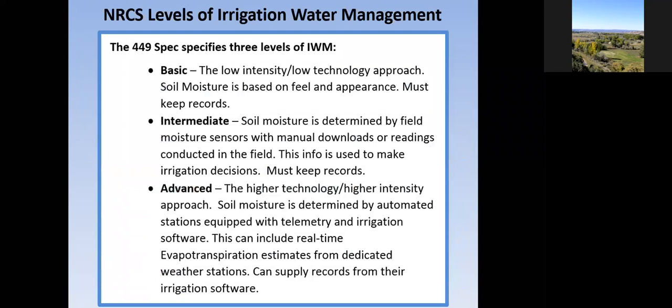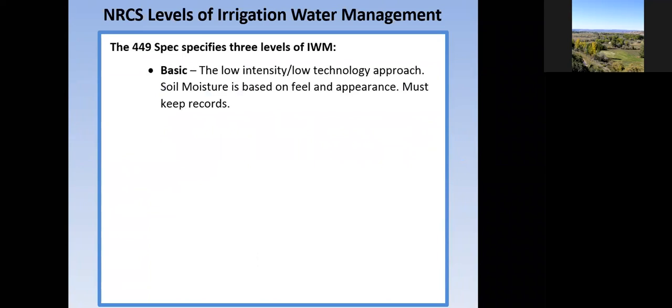The NRCS has three levels of irrigation water management: basic, intermediate, and advanced. I'm going to use those as my levels of irrigation water management and soil moisture monitoring. The basic level is your low-intensity, low-technology approach, where soil moisture monitoring is largely based on feel and appearance.